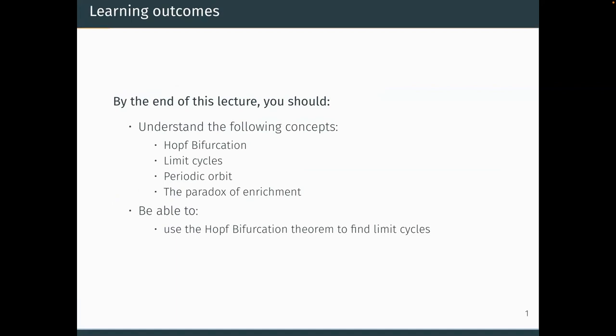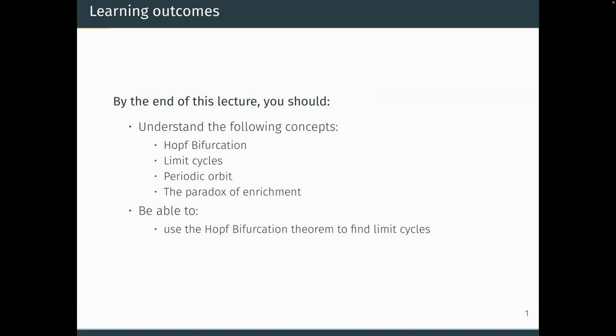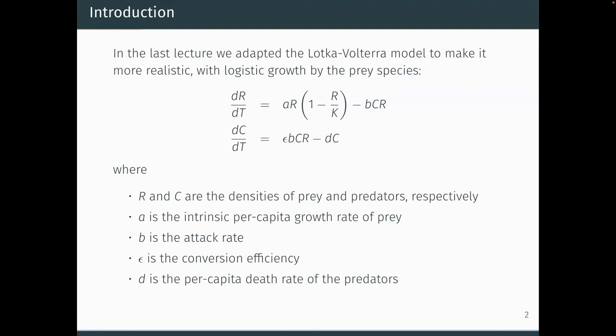By the end of today we'll understand limit cycles, something called a Hopf bifurcation — which should be the last bifurcation we introduce in this course — and then something called the paradox of enrichment.